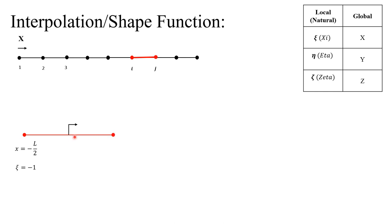This bar element has two nodes. If the length of the element is L, the coordinate of the first node would be negative L over 2, assuming the coordinate zero point is the middle of the element, and the second node has positive L over 2. We also use a dimensionless coordinate system ξ (ksi), ranging from negative one to one. In this table you can see the local coordinates and the global coordinates: x, y, and z are global coordinates, and for local we use the Greek letters ξ, η, and ζ. Since we are only dealing with 1D here, we refer to ξ only. The relation between x and ξ is x = (L/2)ξ, so when ξ = -1, x = -L/2, and when ξ = 1, x = L/2.